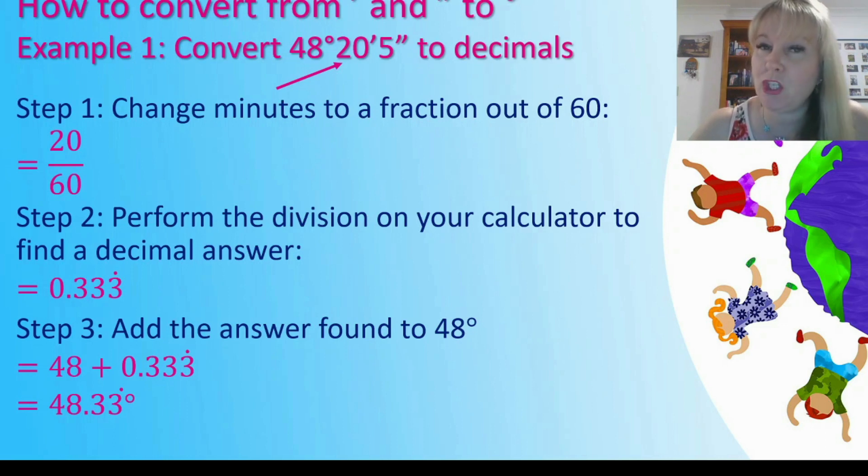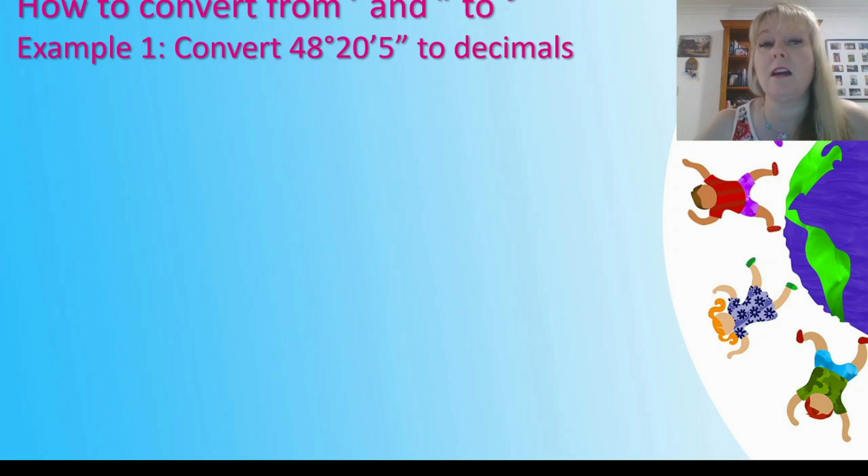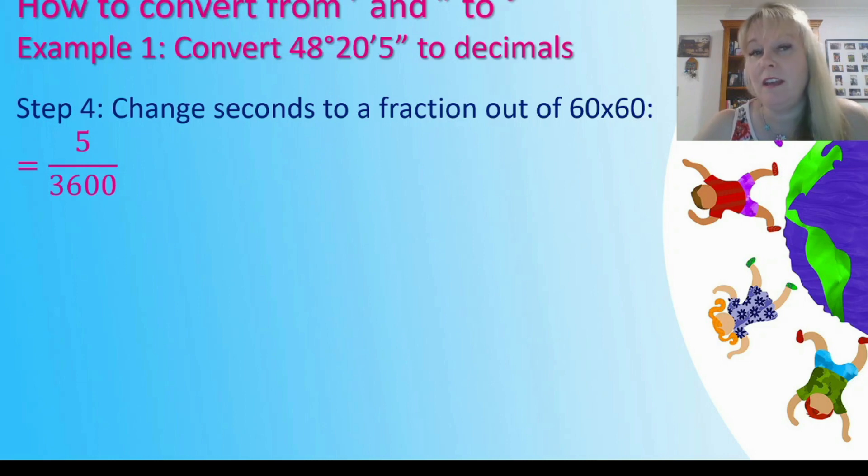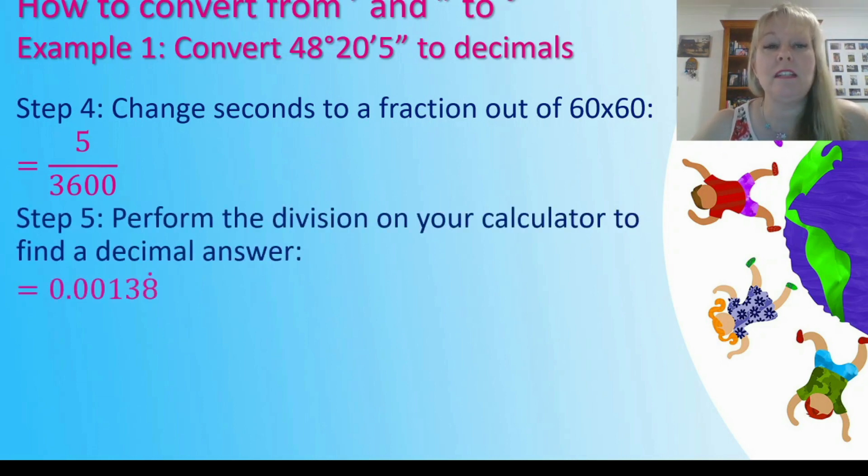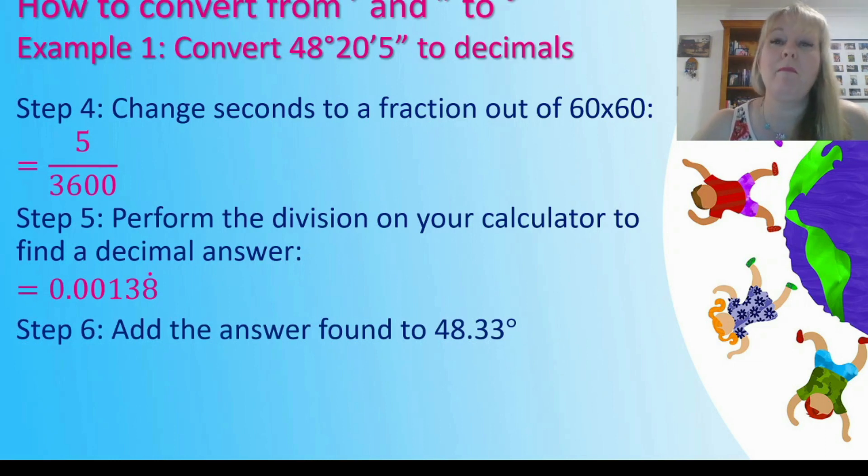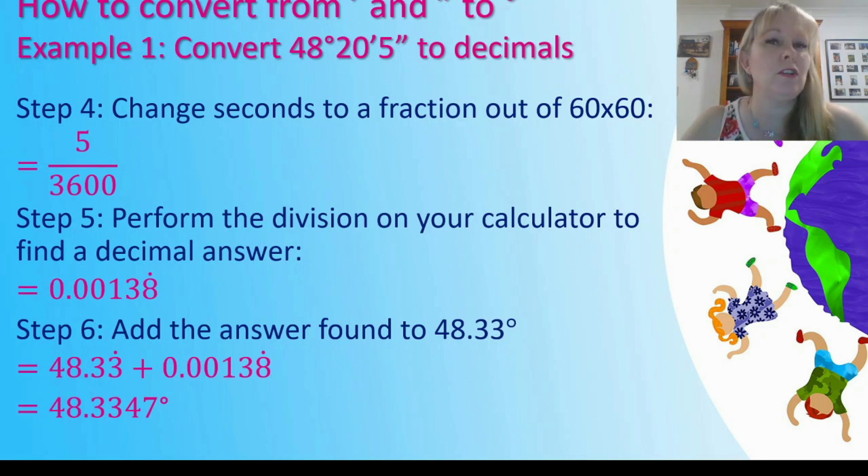Now we need to convert the seconds. There are 60 seconds in a minute, 60 minutes in an hour, so 60 times 60 equals 3,600 seconds in an hour. When we're converting these 5 seconds we do that as a fraction out of 3,600. We do that division on our calculator and we get 0.00138 repeating. Finally we add this to the 48.33 degrees. 48.33 plus 0.00138 gives us 48.3347 degrees. If I round it to two decimal places the impact of the seconds is minimal. Typically two decimal places is fairly typical to present your degrees.